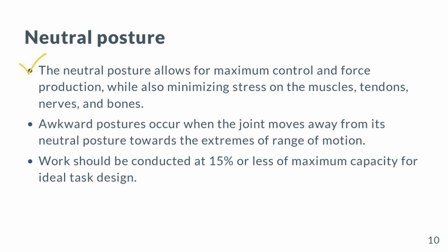A neutral posture occurs when the muscles are relaxed and the joint is naturally aligned, typically in the midrange of motion for that joint. When a joint is not in its neutral posture, the muscles and tendons are either contracted or elongated. Awkward postures occur when the joint moves away from its neutral posture towards the extremes of range of motion.